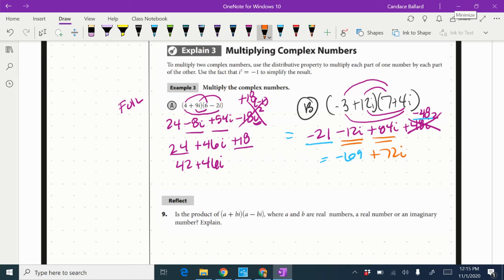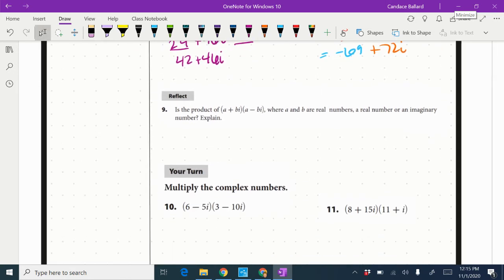So the reflect question is asking: is the product of (a + bi) times (a - bi), where a and b are real numbers, is it a real number or an imaginary number? And we need to explain.